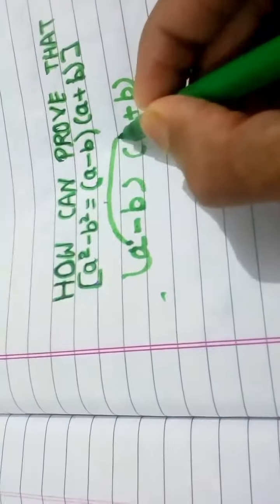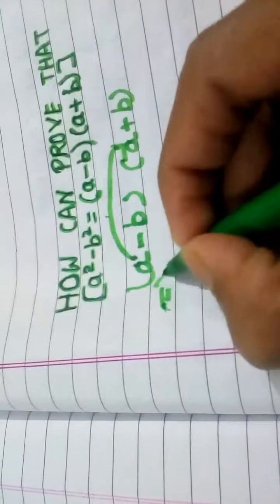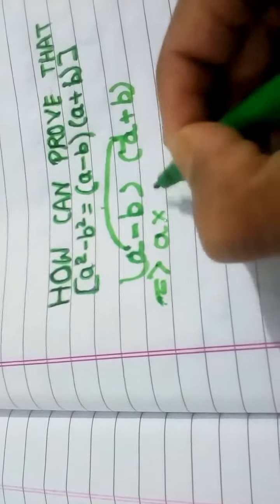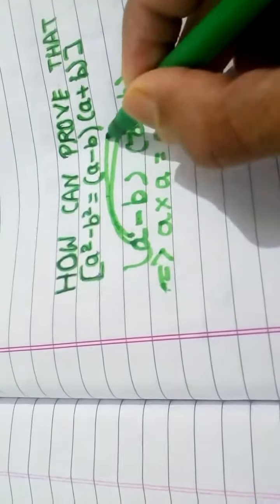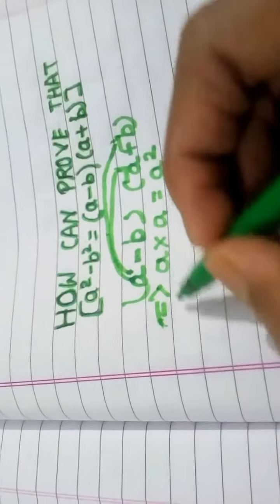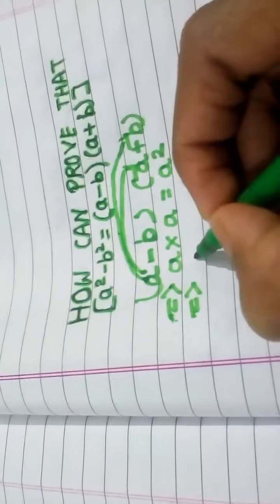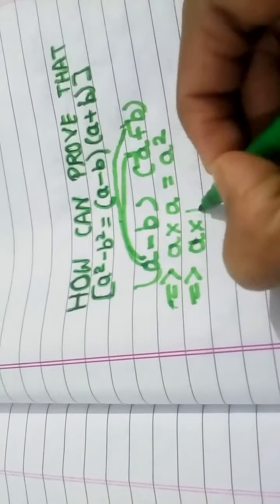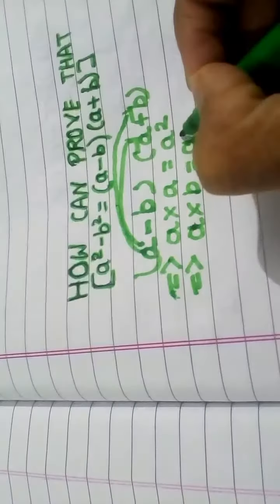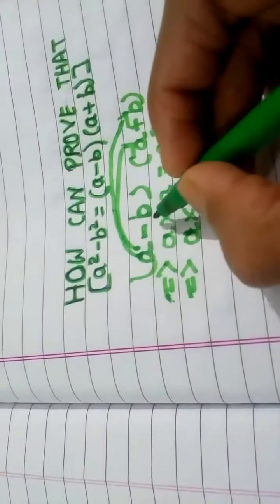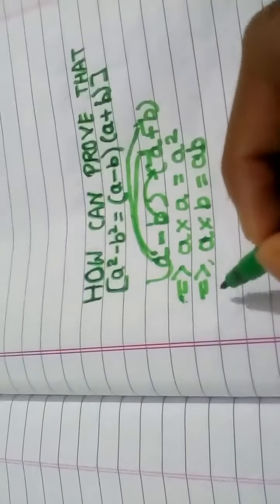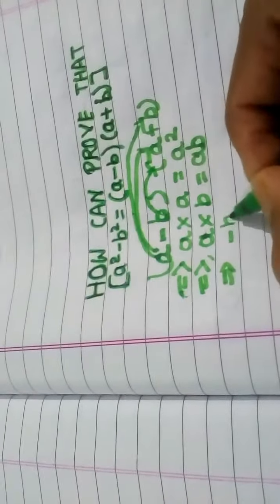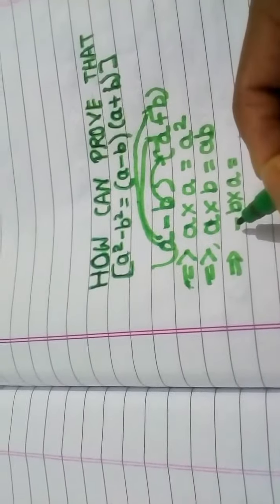First, this term is multiplied by this one, so here we get a into a, that means a squared. And this one is multiplied by this, so in this case we get a into b, that means ab.